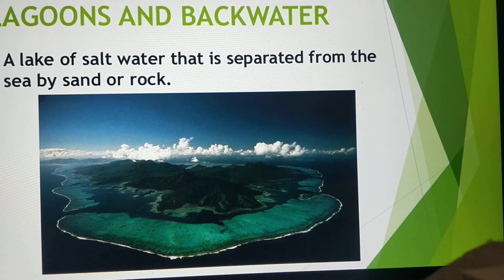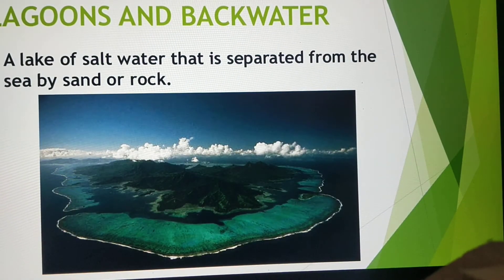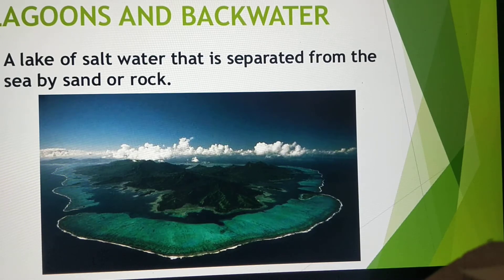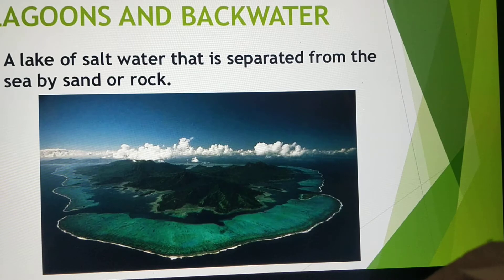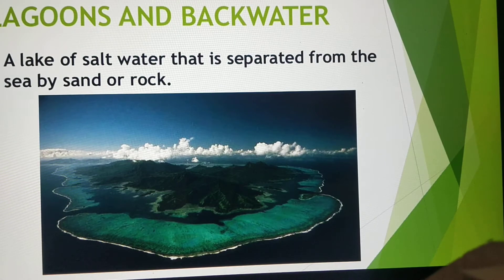Here you can see the figure of groundwater. Next we have lagoons and backwater. A lagoon is a lake of salt water that is separated from the sea by sand or rock. India has a very long coastline stretching over more than 6,000 kilometers. These serve as surface water resources, although the quantity of water is generally brackish in nature. They are basically used for fishing and irrigating paddy crops and coconut.